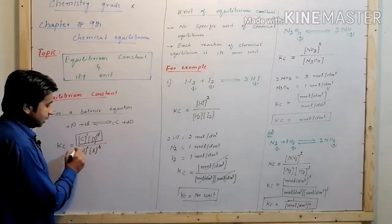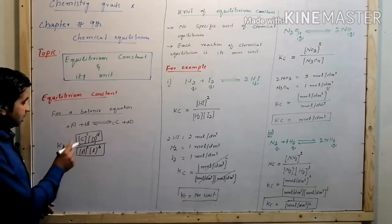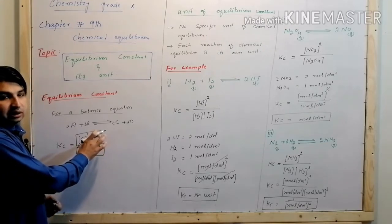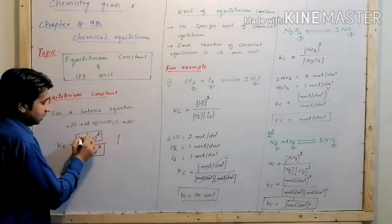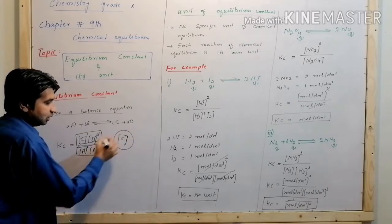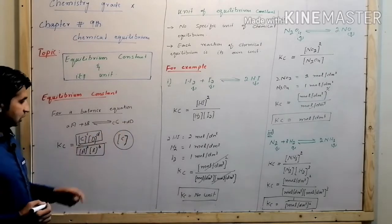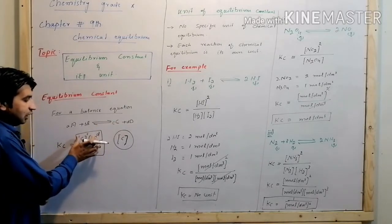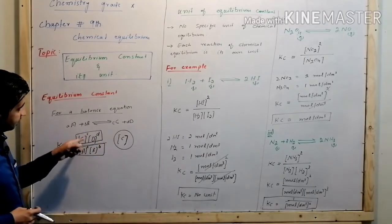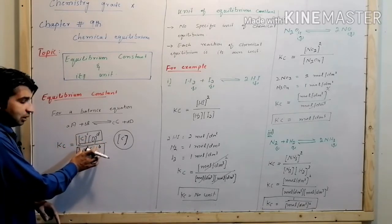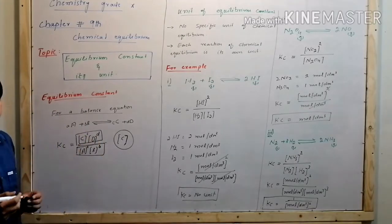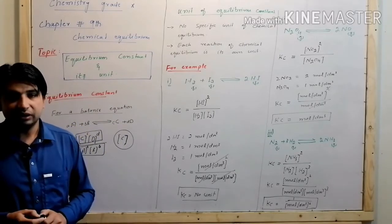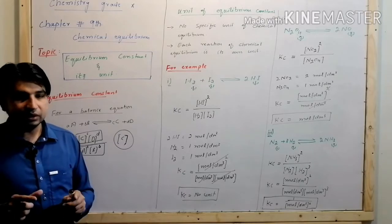The denominator contains the reactant concentrations and the numerator contains the product concentrations — small c, small d, small a — where concentration is given as a molar quantity raised to the power of the stoichiometric coefficient. Kc is defined by the initial concentration, temperature, and experimental value.